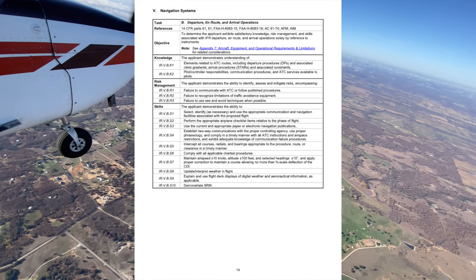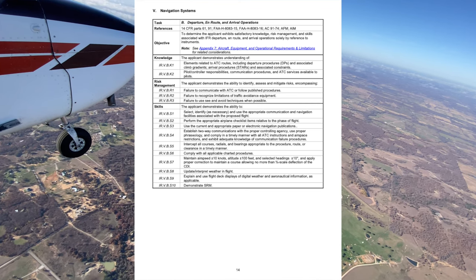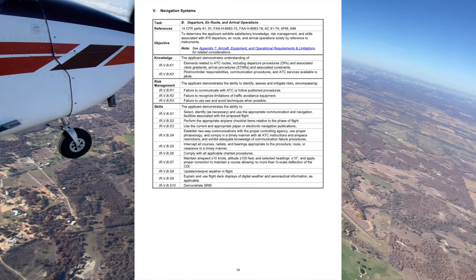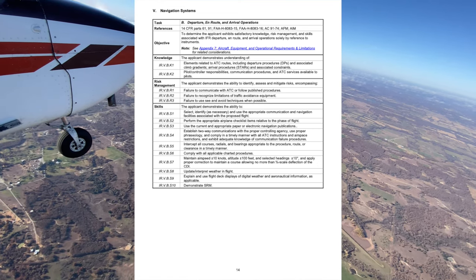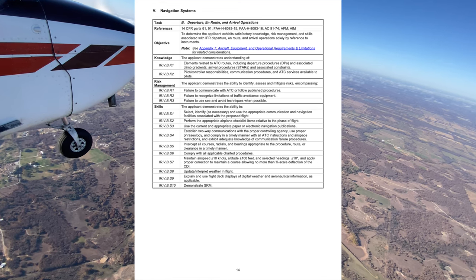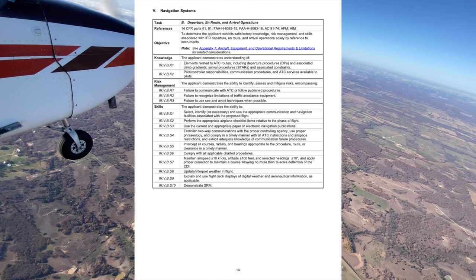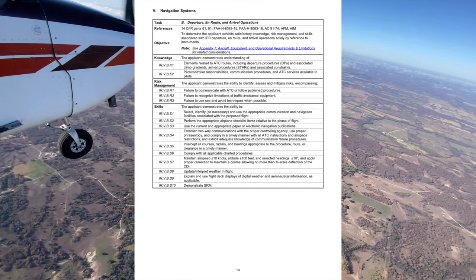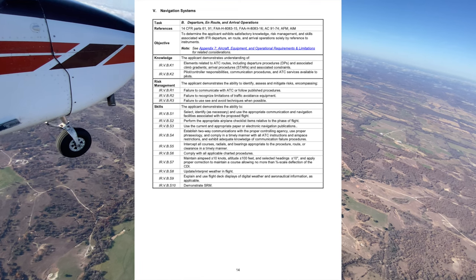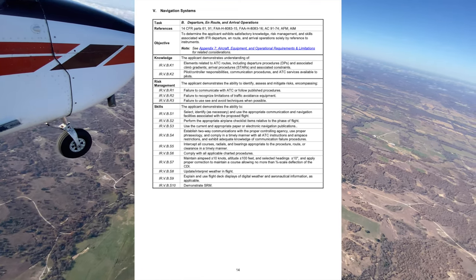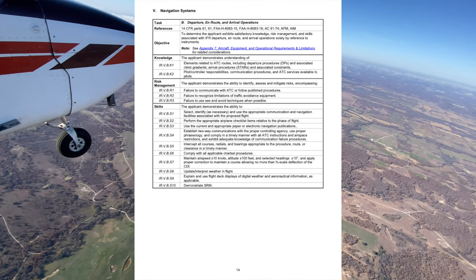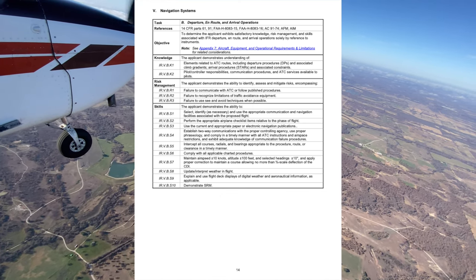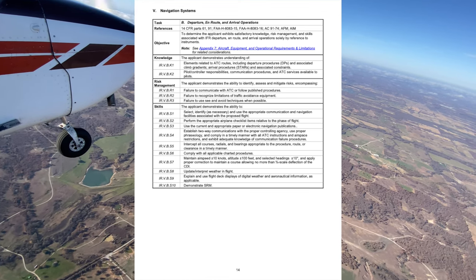To remember these, use the acronyms F-111 and three 152s. Class Alpha is IFR only, no VFR. Class B: 3 statute miles, clear of clouds. Classes C, D, and E below 10,000 feet MSL: three 152s (3 statute miles, 1,000/500/2,000). Class E at or above 10,000: F-111 (5 statute miles, 1,000/1,000/1 mile). Class G at 1,200 or less AGL during the day: 1 statute mile clear of clouds. Class G at night: 3 statute miles, 5-1-2. Above 10,000 MSL: F-111.